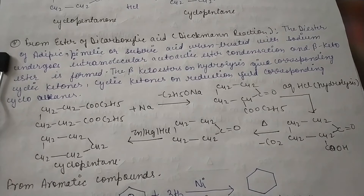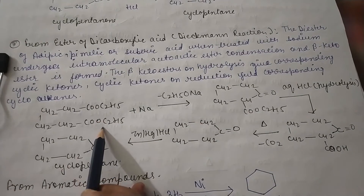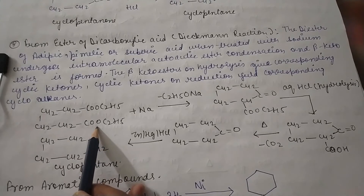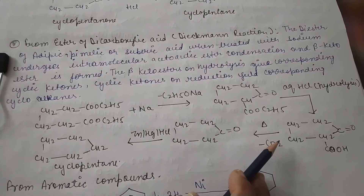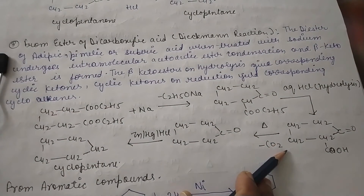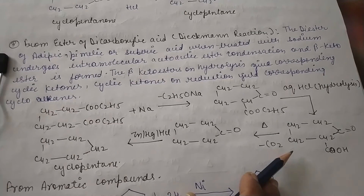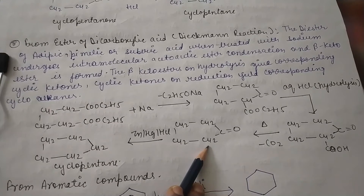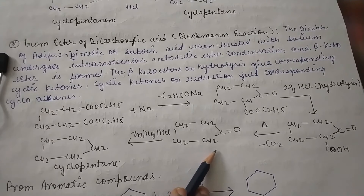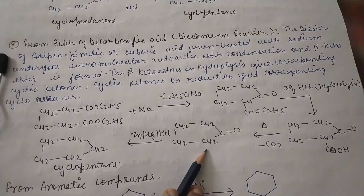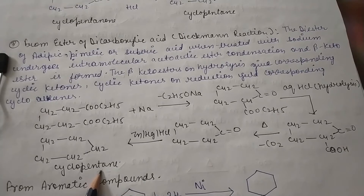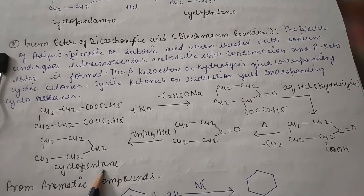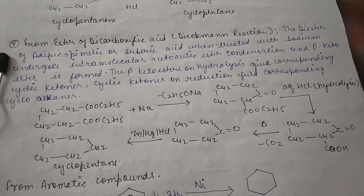Now let's see the Dieckmann reaction. Here the diester of adipic acid reacts with sodium and undergoes intermolecular acetoacetic ester condensation. A beta-ketoester is formed, which is then hydrolyzed to give the cyclic ketone. This cyclic ketone on reduction yields the cycloalkane derivative, completing the formation of cyclopentane.